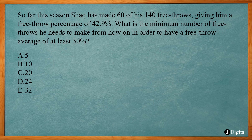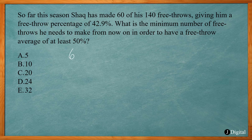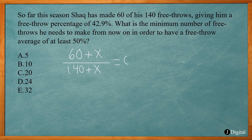This one says so far this season, Shaq has made 60 of his 140 free throws, giving him a free throw percentage of 42.9%. What is the minimum number of free throws he needs to make from now on in order to have a free throw average of at least 50%? This is asking how many in a row he needs to make to bring his average up to 50%. Again, we use the basic formula: how many made over the total. That's 60 plus X — how many more he needs to make — over 140 plus X, since the total increases by X as well.